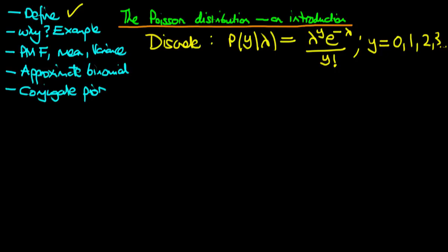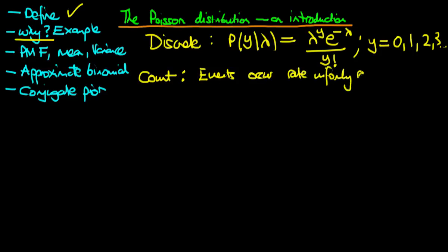Because y measures a non-negative integer, we can think about the circumstances when it might be appropriate to use a Poisson distribution. Generally, we use the Poisson distribution to measure the count of events which occur at a rate that is uniformly random in either time or space. We're talking about the count of events which occur at a uniform rate through time or through space.